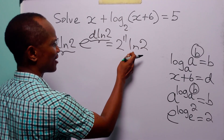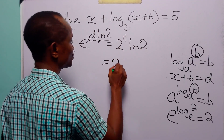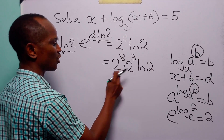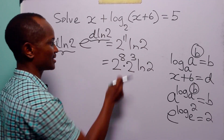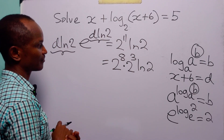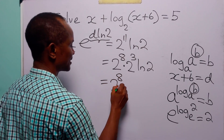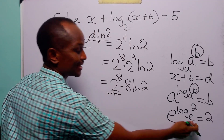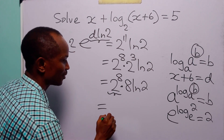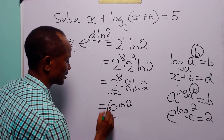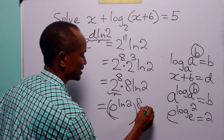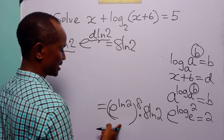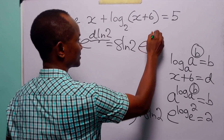Before applying the Lambert W function, let us rearrange the right-hand side a bit more. We can write this as 2 to the power 8 multiplied by 2 to the power 3 times ln 2, since 8 plus 3 equals 11. This is the same as 2 to the power 8 times 8 ln 2. Rewriting 2 as e to the power ln 2, this right-hand side becomes e to the power ln 2 to the power 8 multiplied by 8 ln 2, giving us 8 ln 2 times e to the power 8 ln 2.